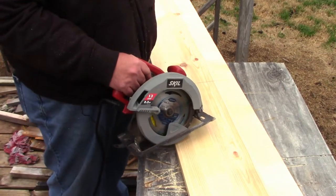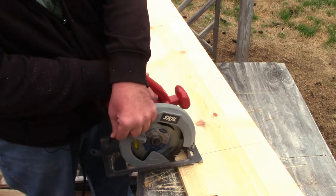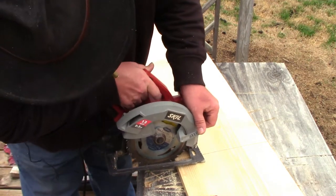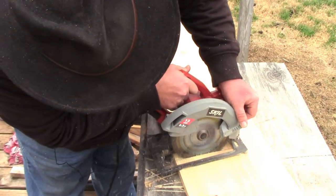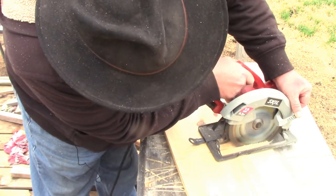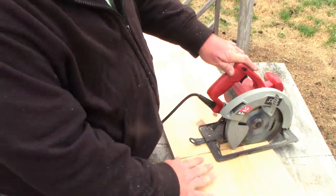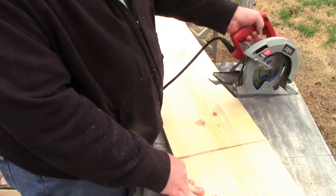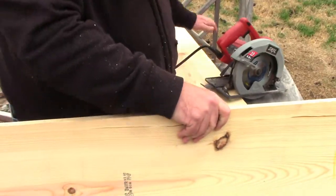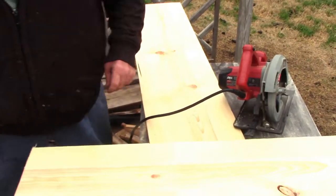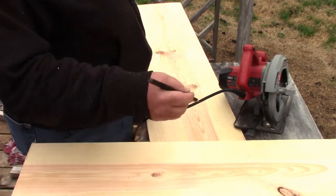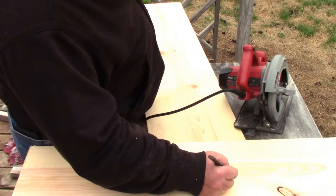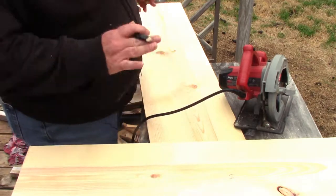Now that we have our length set, all we need to do is run the saw along the line and cut this. So I have one side cut. And again, since we're going to use one side to do the measurement for the next one, we're going to mark this as a master board so we know that this is the same one we're using every time.